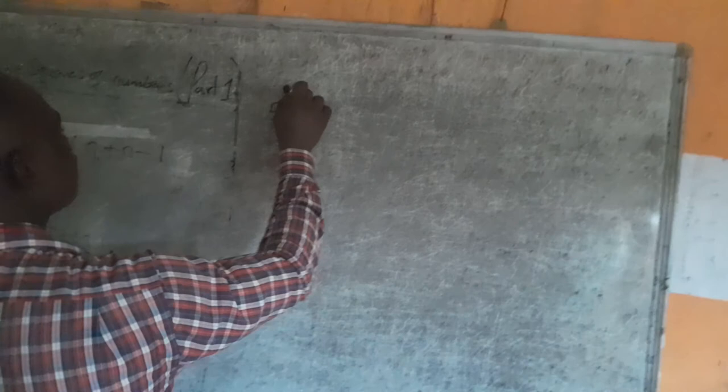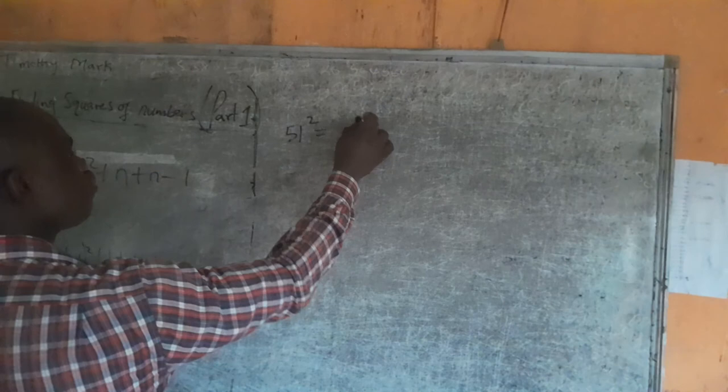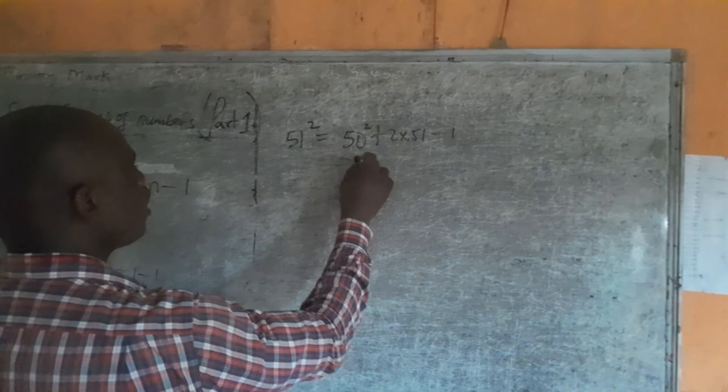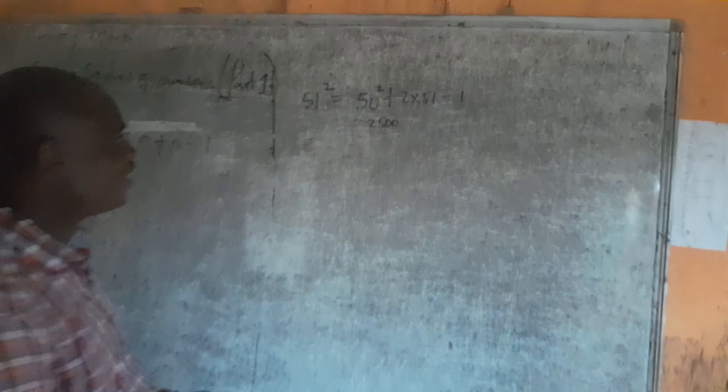You're looking for, like I said, you're looking for 51 squared. Now, 50 squared. That is now 50² + 2(51) - 1. How do you know this is? 2 times 500. Now, your priority is 5² is 25. 0² is 0.